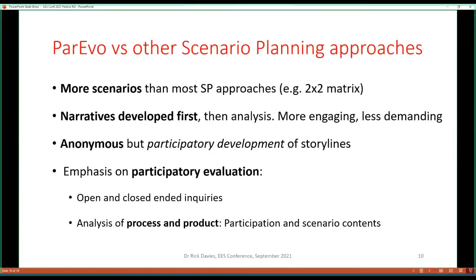Compared to other scenario planning approaches, one important difference is that more scenarios — a bigger diversity — are developed, in contrast to the most stereotypical approach which ends up with a two-by-two matrix showing four possible scenarios. The exercise you just saw had about 12 surviving storylines, plus an equal number of extinct storylines. Participation is anonymous, so the focus is on people's ideas, not the identity of the people. The evaluation process is participatory, involving open and closed-ended questions, looking at both the process of generating storylines and the contents of those storylines.